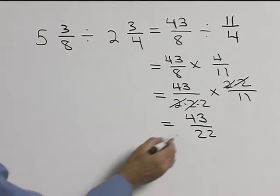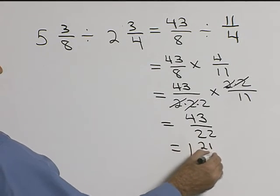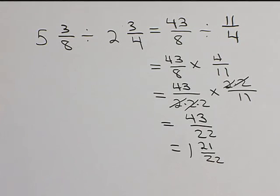And we want to write that as a mixed number. So twenty-two will go into forty-three one time with twenty-one left over. So performing our operations we get one and twenty-one twenty-seconds.